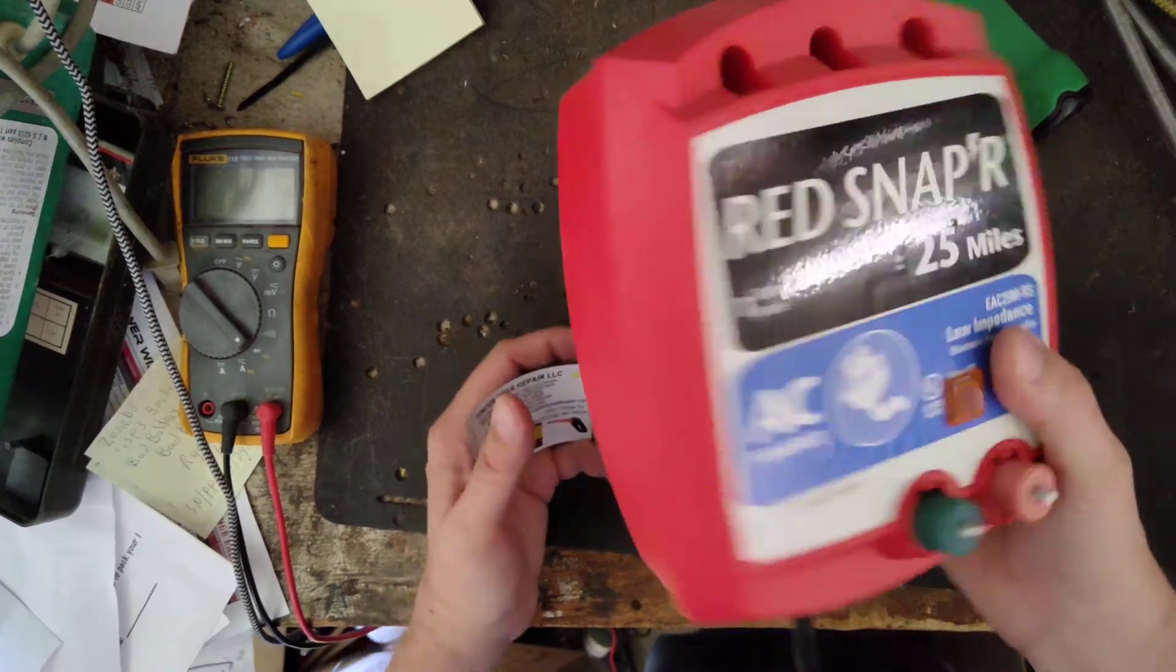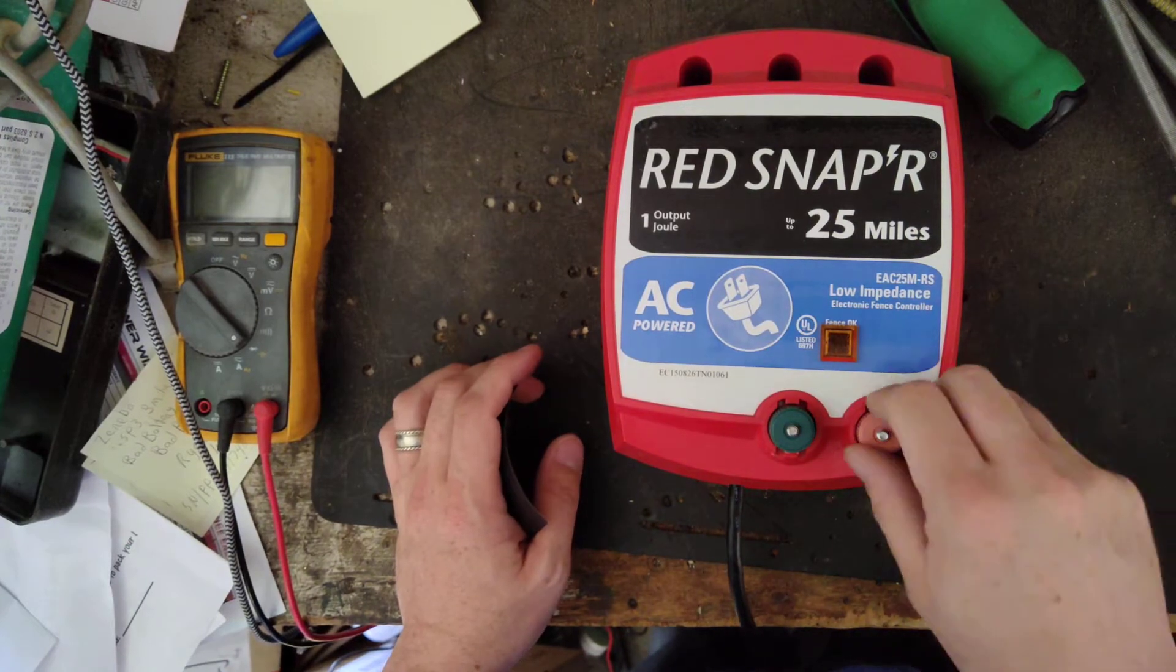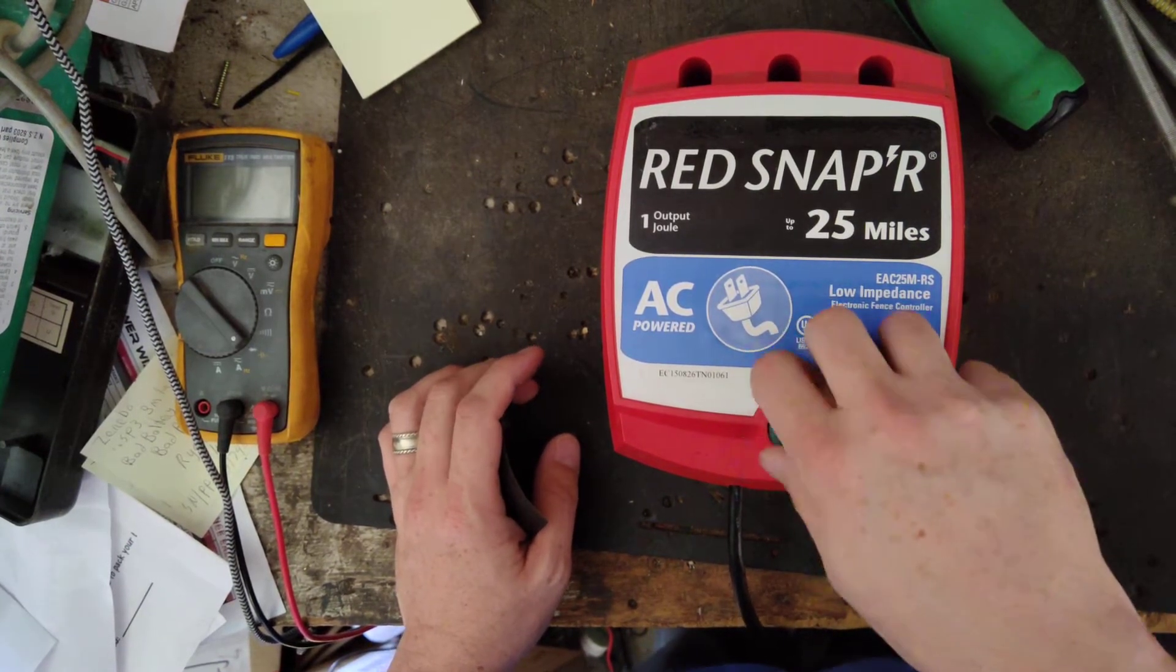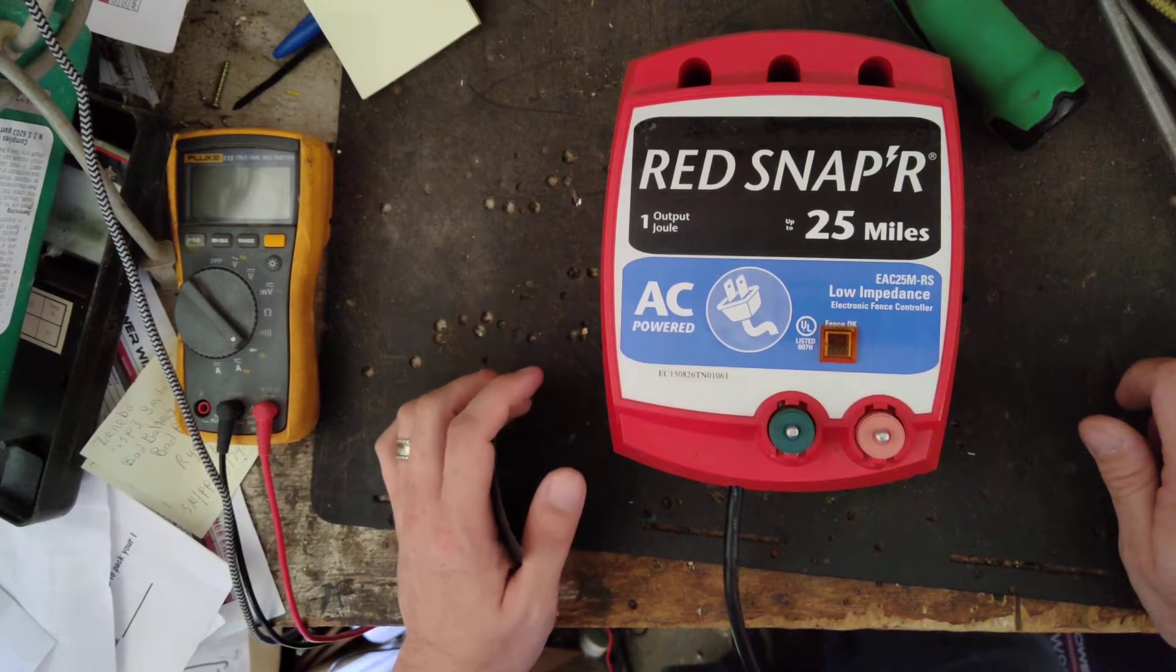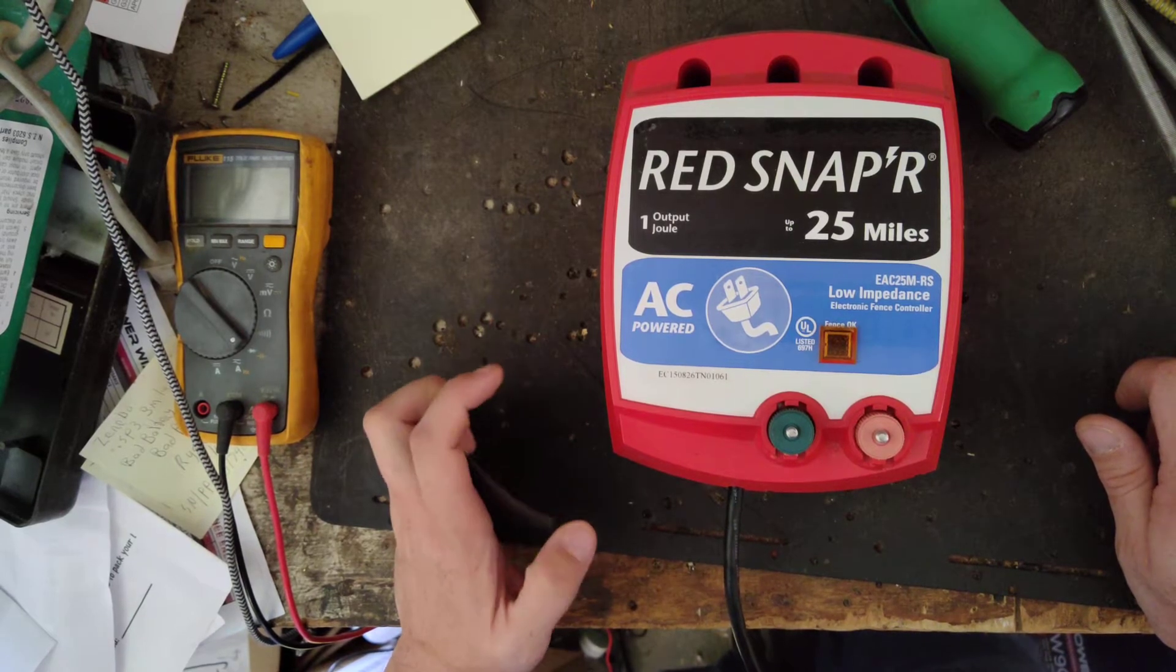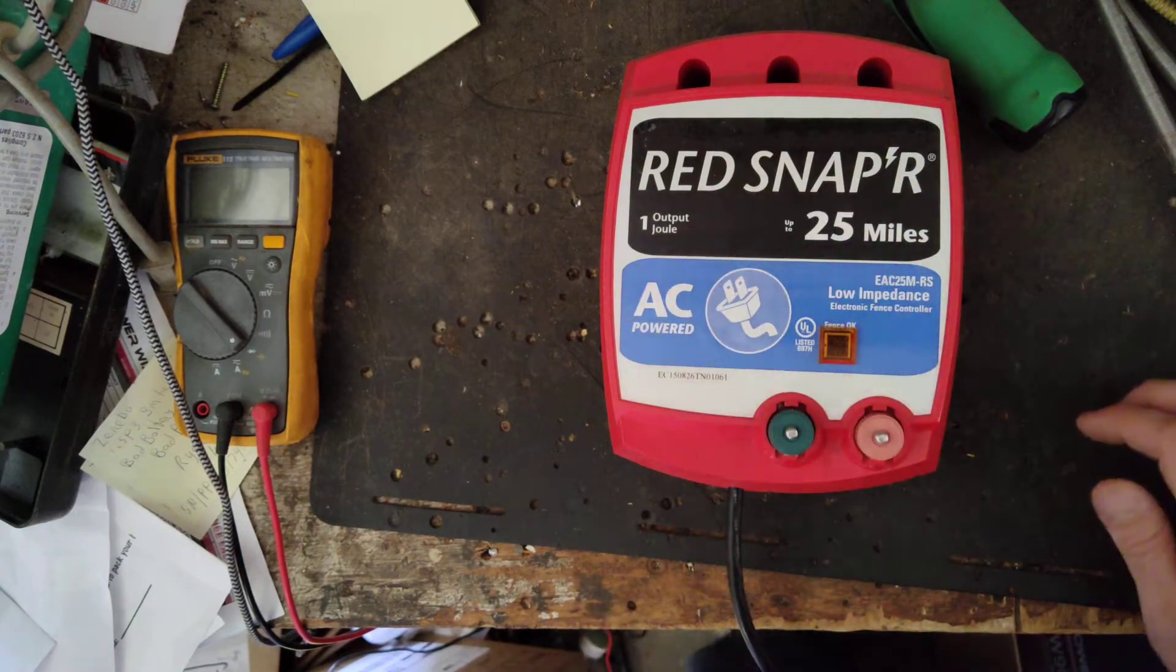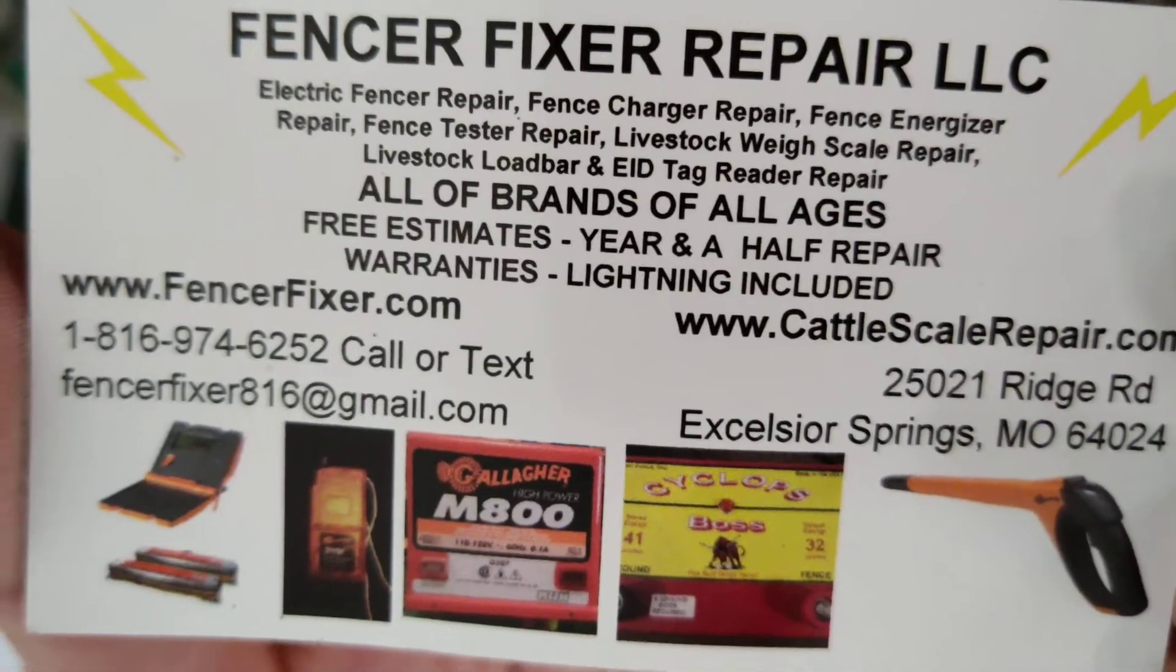I think they still make this. It may look a little different or maybe a different label on the front, but I think they basically look the same. This would be the same kind of repair or same kind of unit as a Zareba 25-mile or a Blitzer 25-mile, American Farmworks 30-mile, something like that. Same maybe a different case, but the guts are basically the same for the most part. There's a different sticker on the front, but there's some information for you.